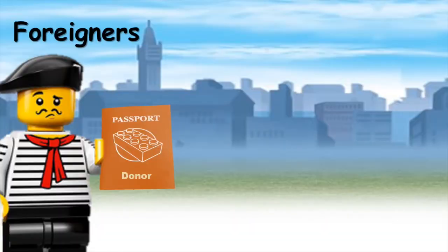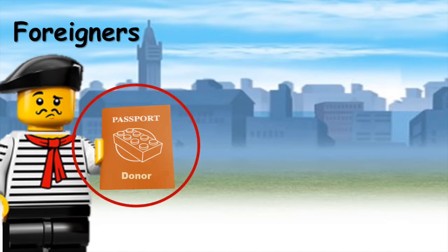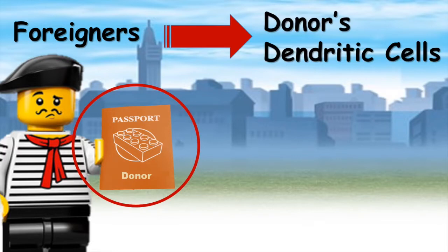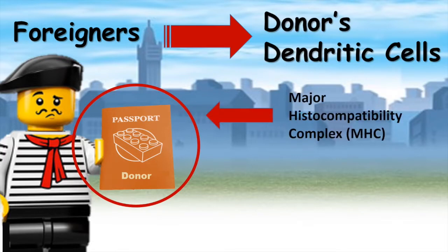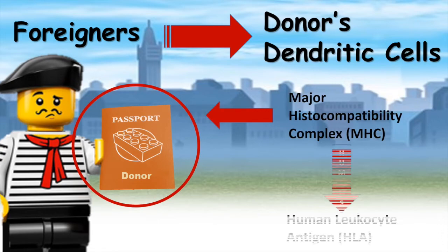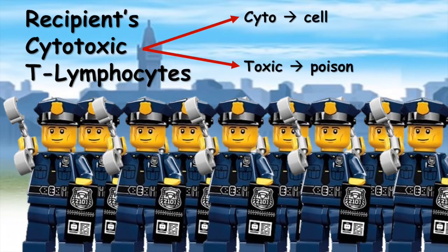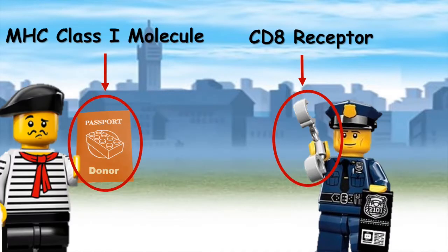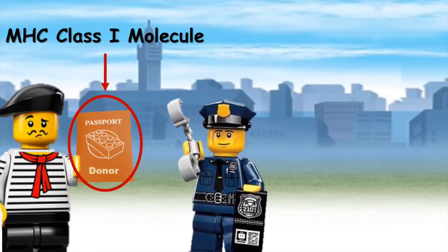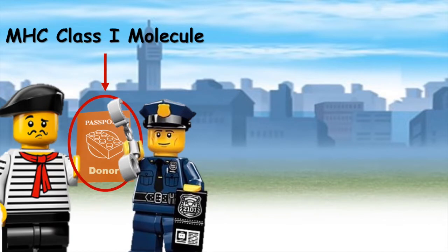What about when a donor gives an organ or tissue to a recipient? In an organ or tissue transplant, some foreigners holding different passports enter Legotopia — and these are the donor organ or tissue's dendritic cells. These cells have self-peptides or proteins on their surfaces called the major histocompatibility complex, which in humans is known as a human leukocyte antigen. The recipient's cytotoxic T lymphocytes, or a type of white blood cell that kills other cells, represented here by these Legotopia police figures, have a special type of CD8 receptor that attaches to the donor cell's MHC class 1 molecules.